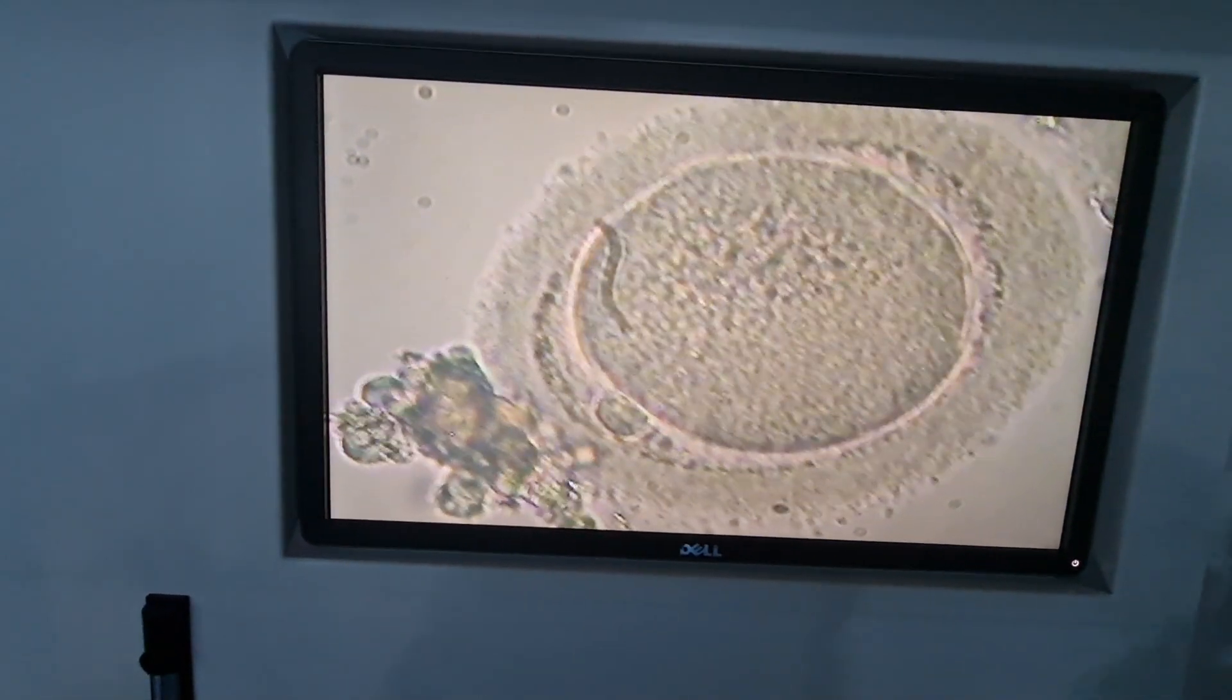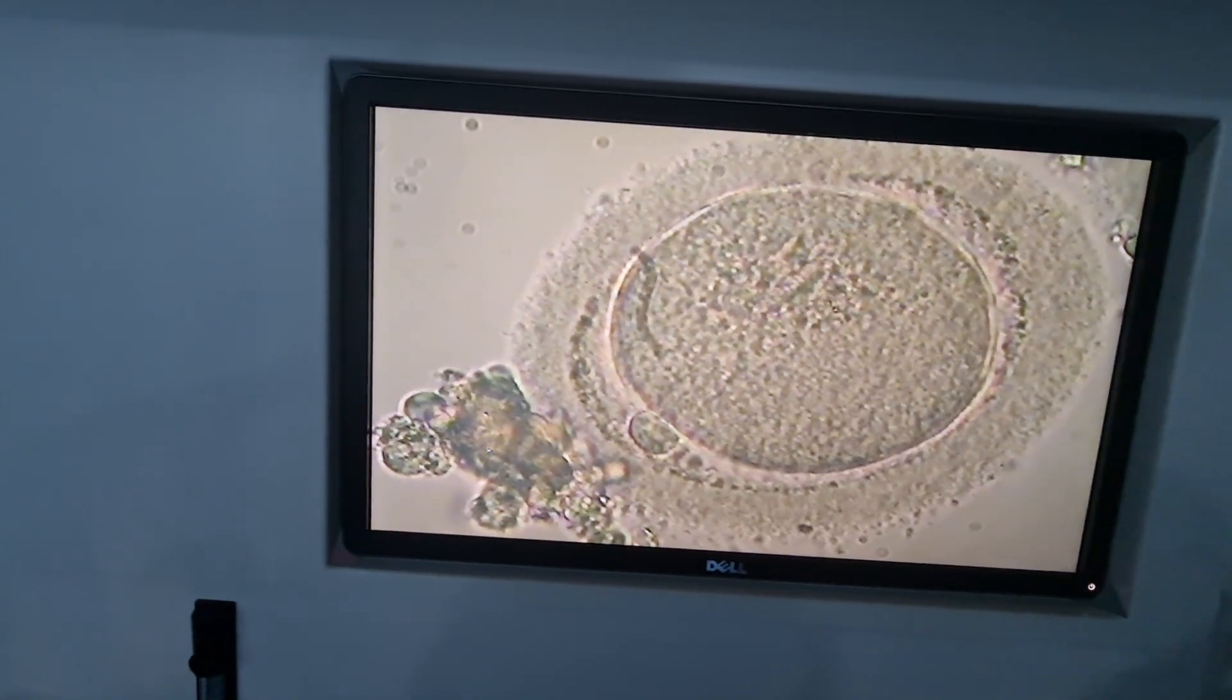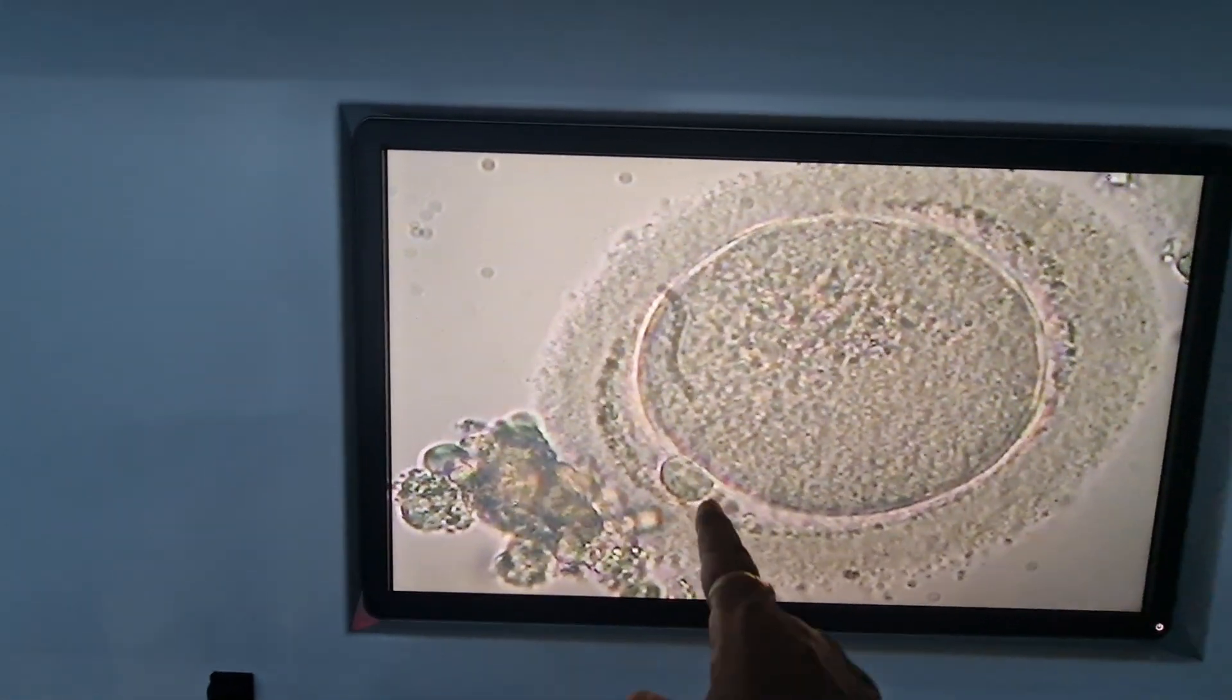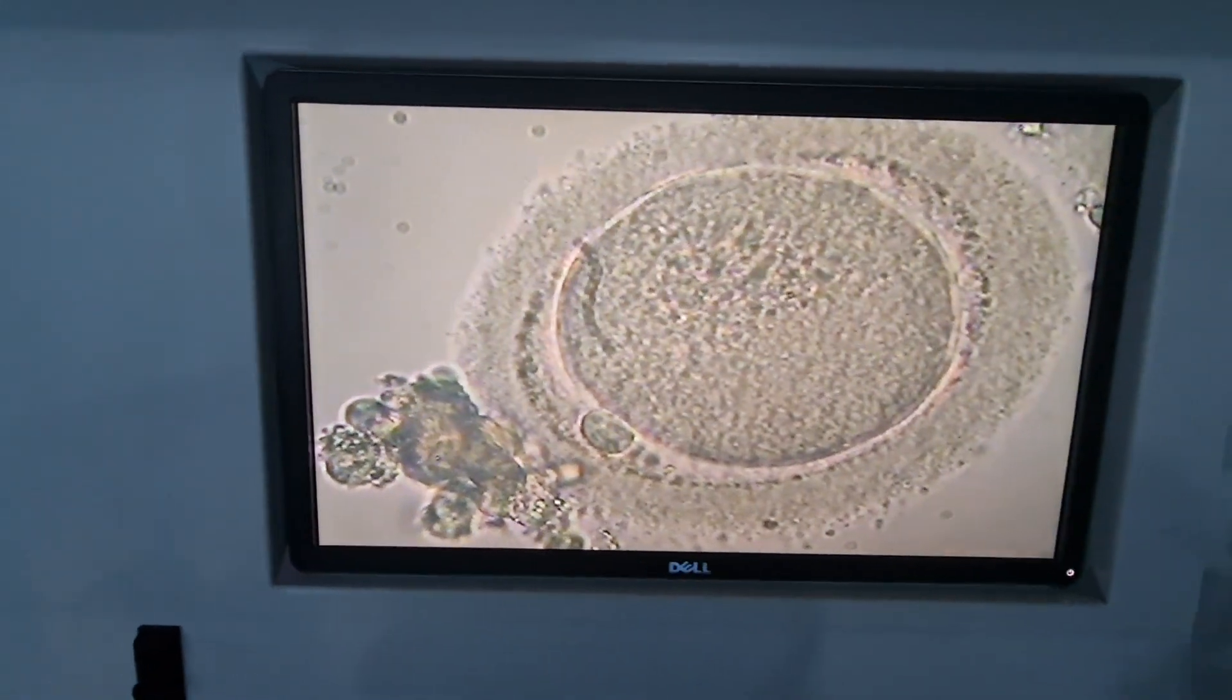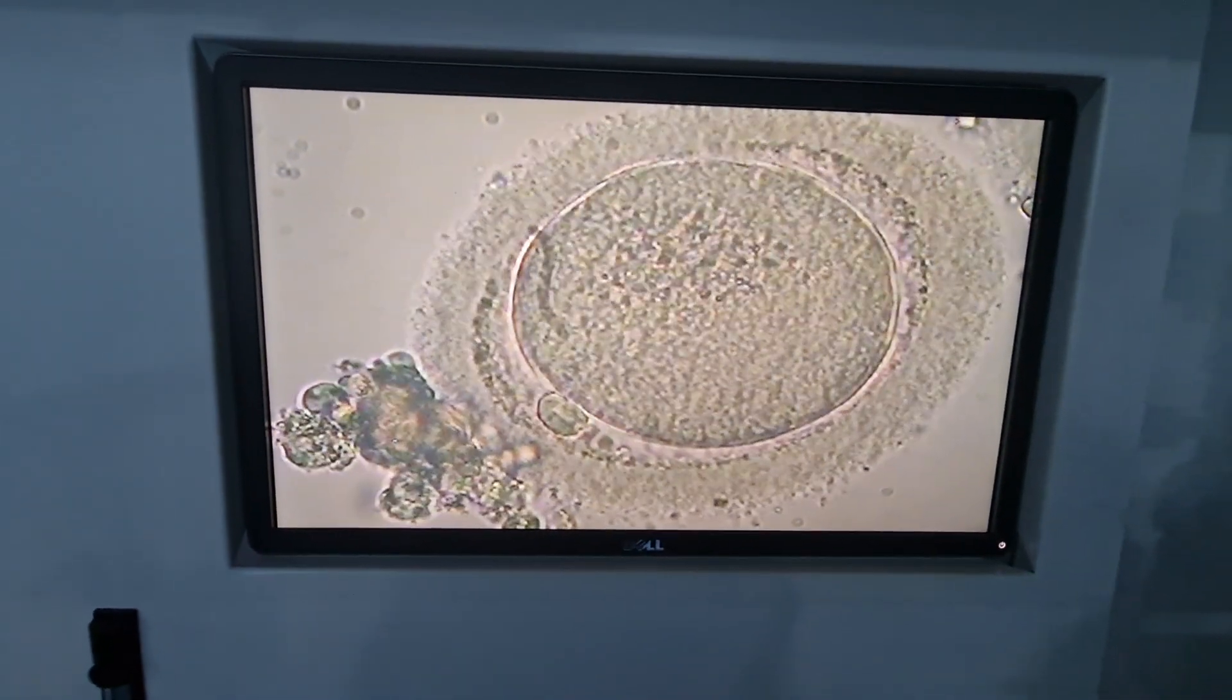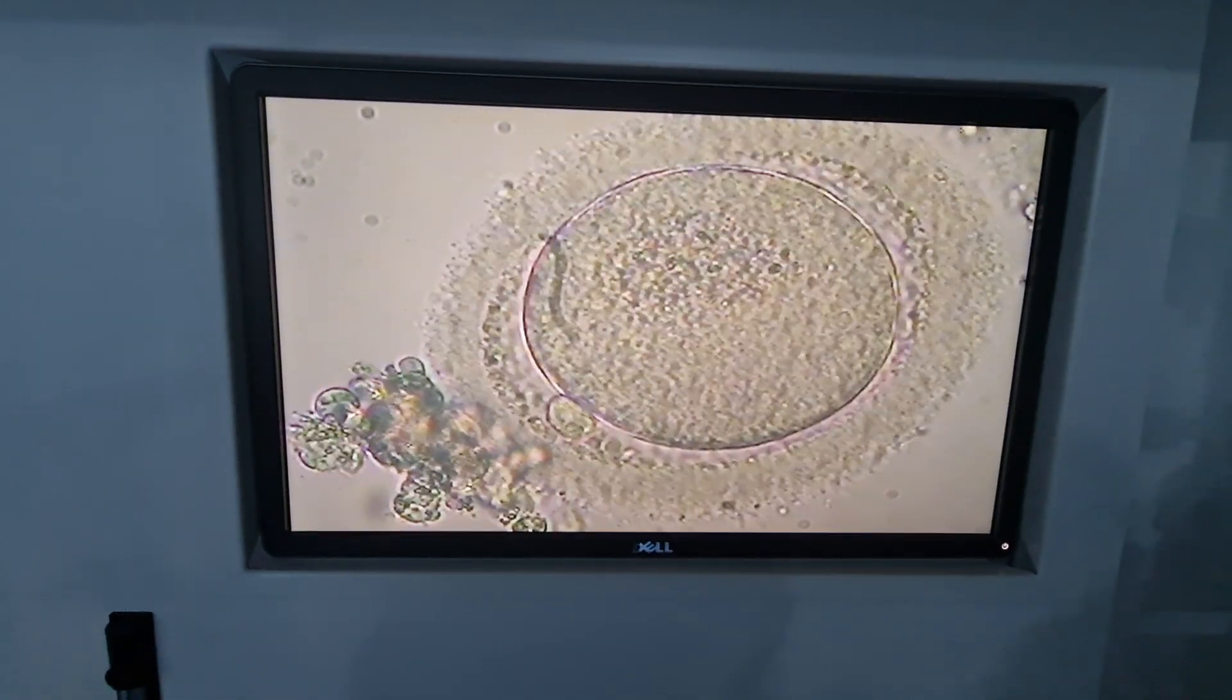This is a mature human oocyte. We can see a single polar body at 7 to 8 o'clock, with thick zona and perivitelline space. We can see the oocyte without any nucleus.